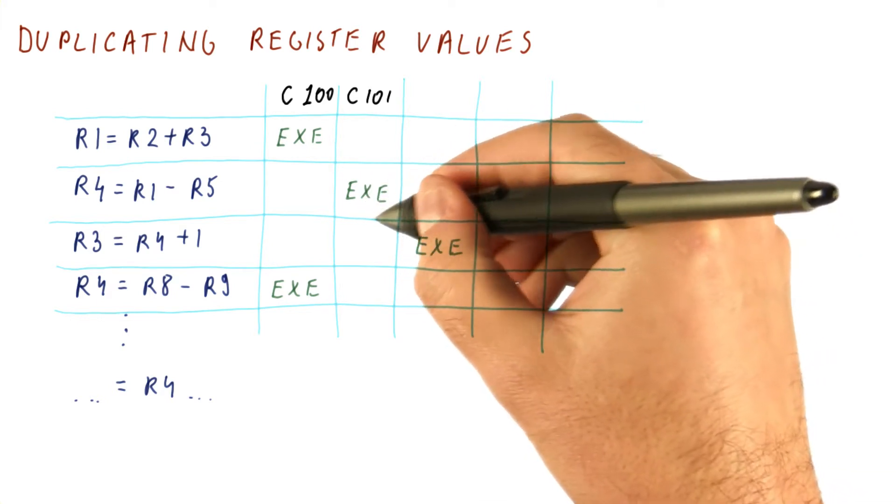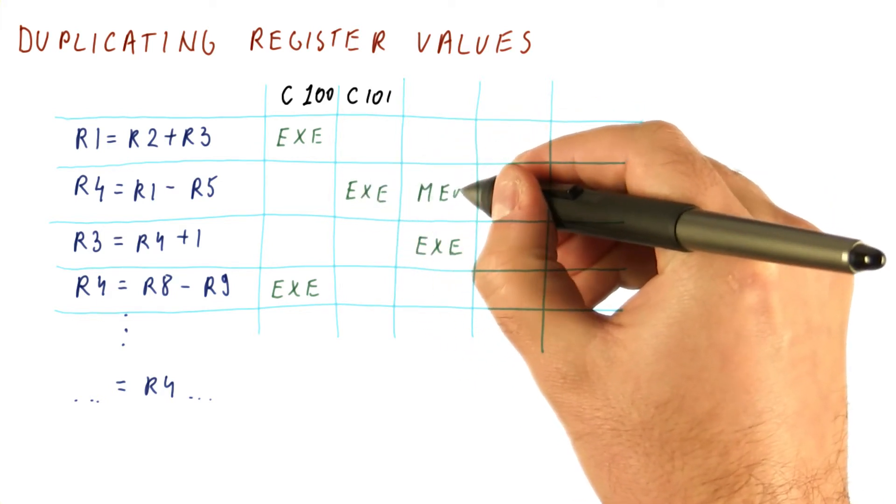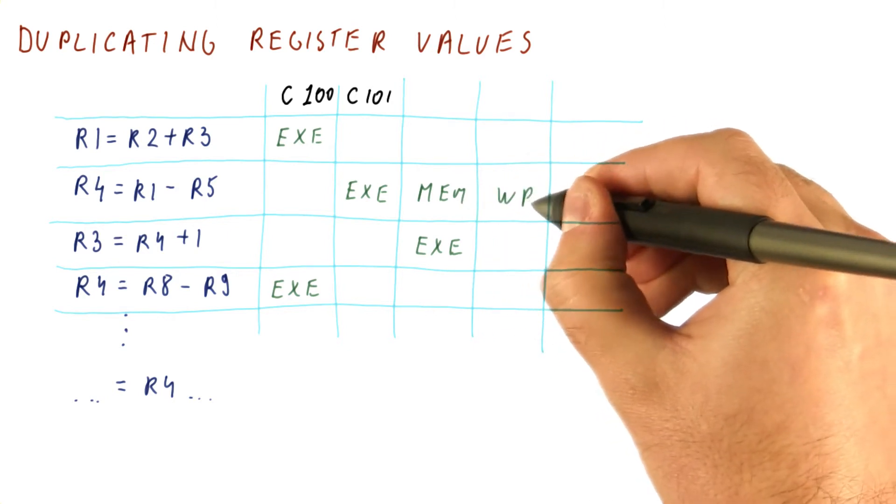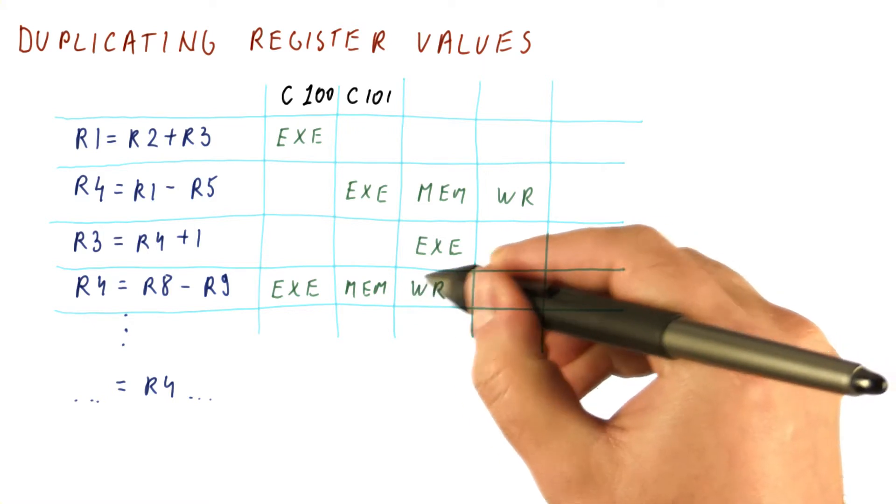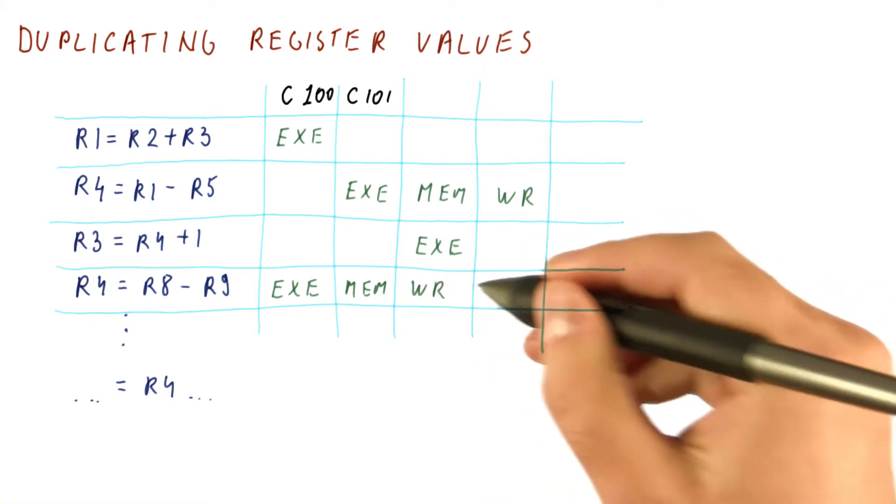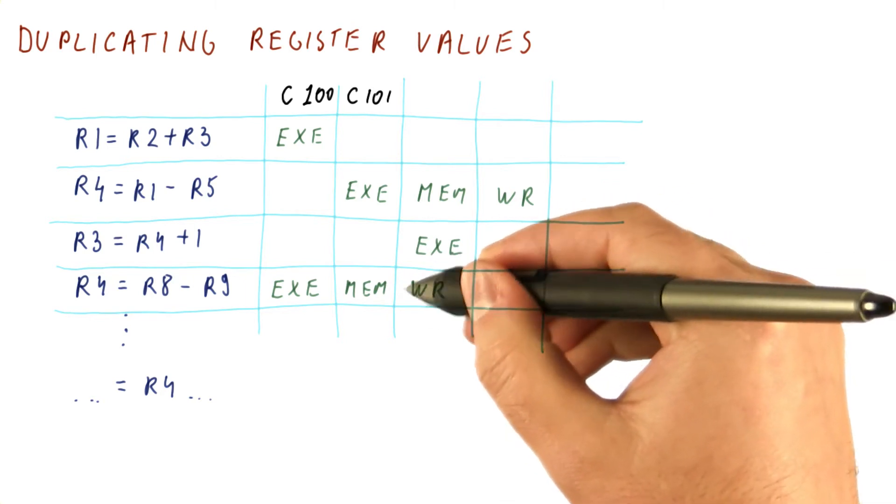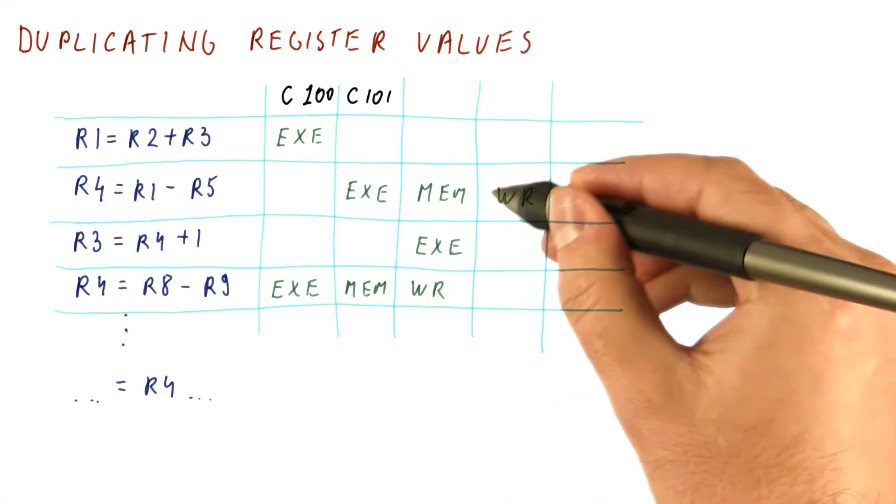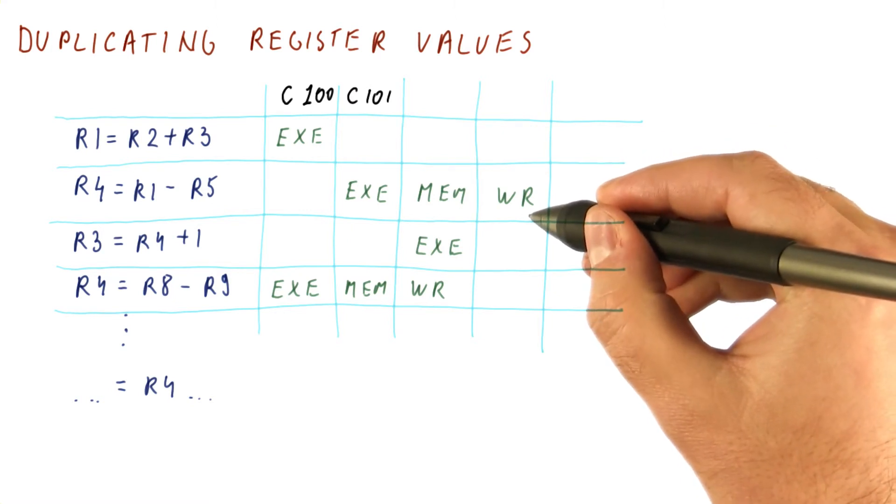Well, if this is in execution stage, let's say that we have the memory stage next, and the write register stage next. Meanwhile, this instruction goes through the mem stage here and then write register here. So as you can see, we first write this R4 and only then write this R4.